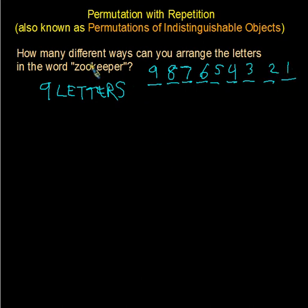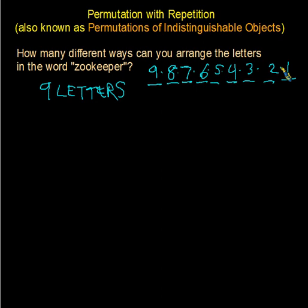Unfortunately, because there are indistinguishable objects — the E's are indistinguishable from each other, and the O's are indistinguishable from each other — we're not going to get that many possible permutations. So we have to kind of set that aside. Although it is kind of a starting point.